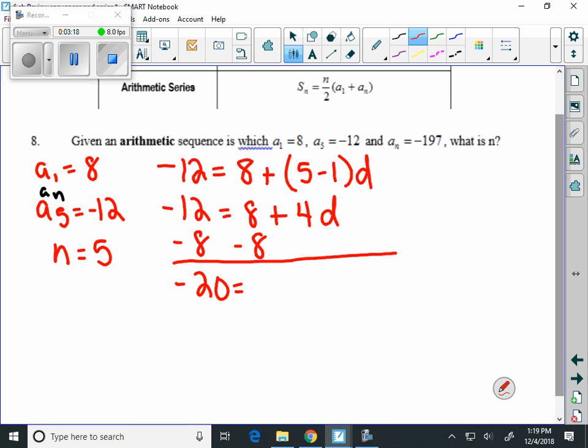And we get negative 20 equals 4d. And divide those sides by 4. So our common difference is negative 5.